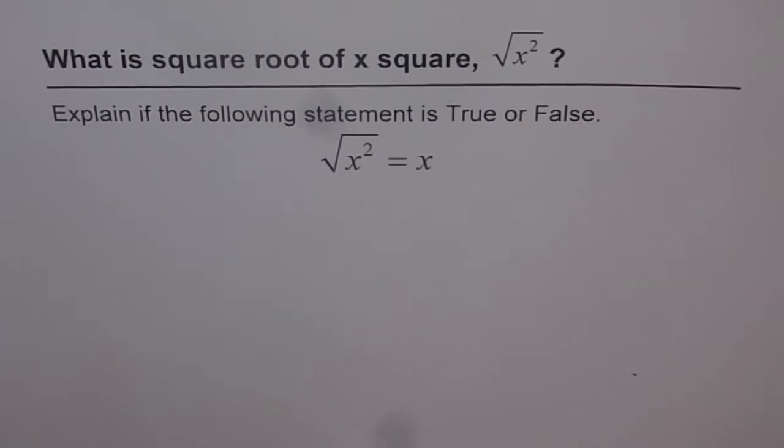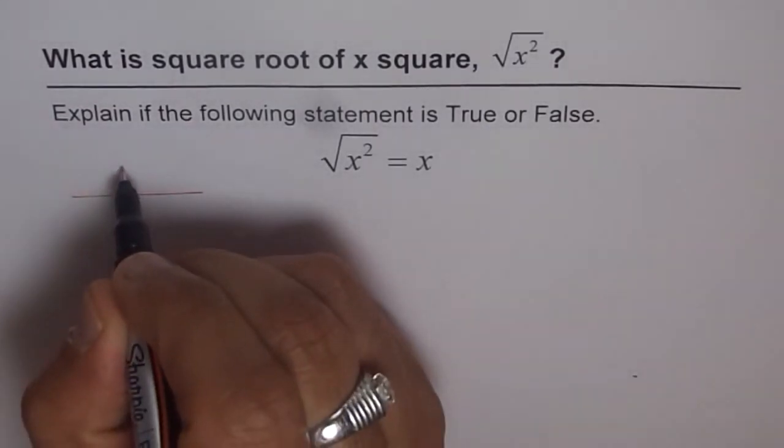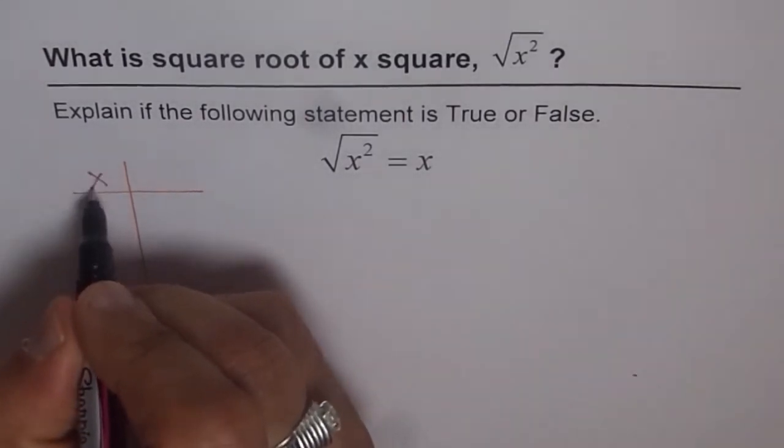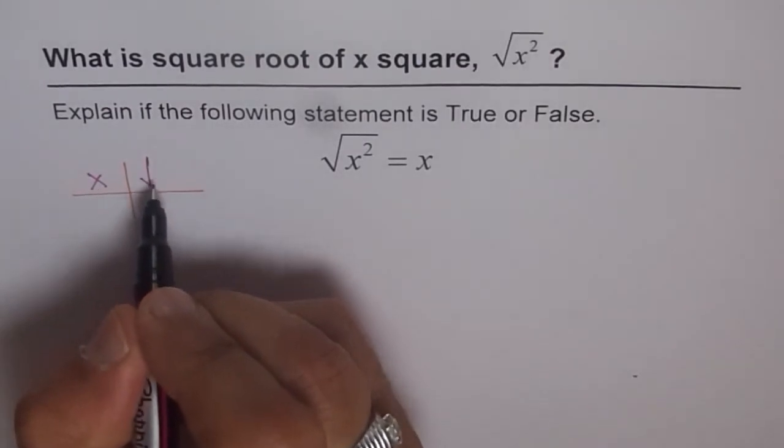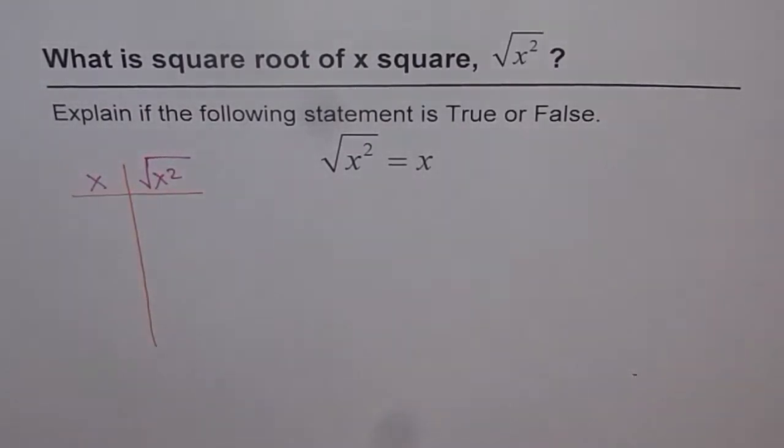If it is not true, then what is square root of x square? Think about it. And here is how we can analyze it. Let me make a table. And in this table, I will plug in some values for x and then find what is square root of x square. And we will see if they are same things or not. Let me make three columns here.